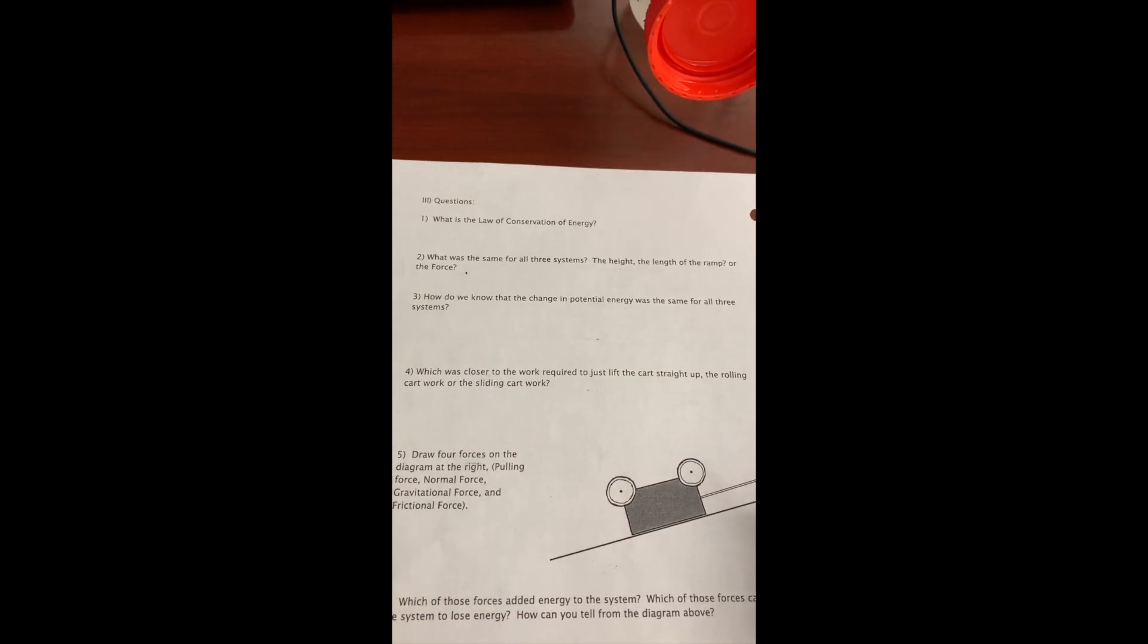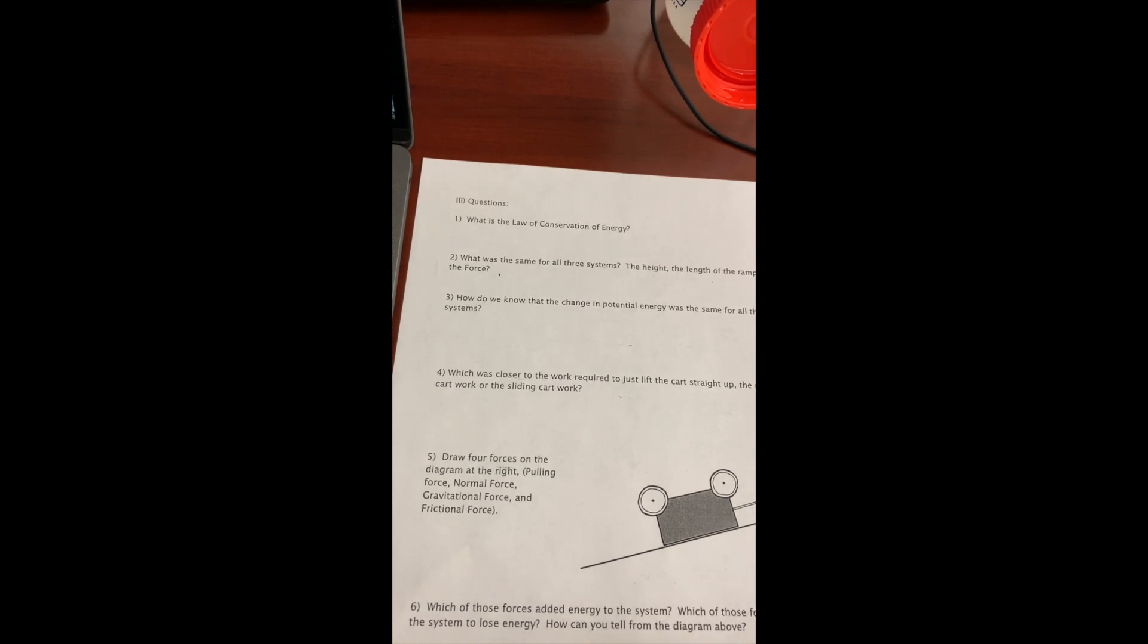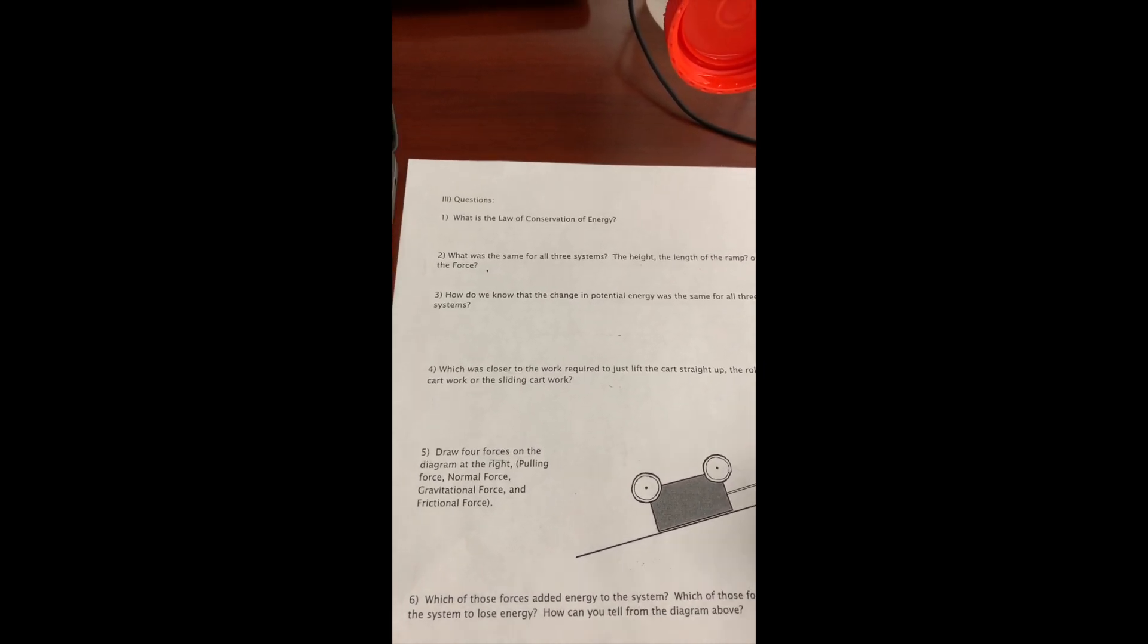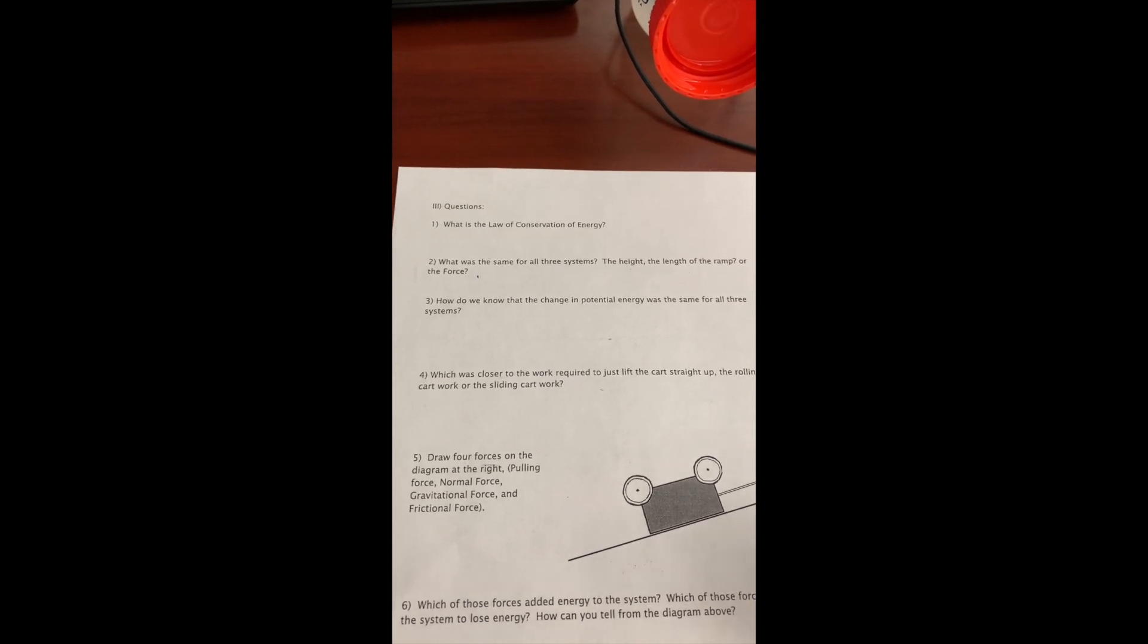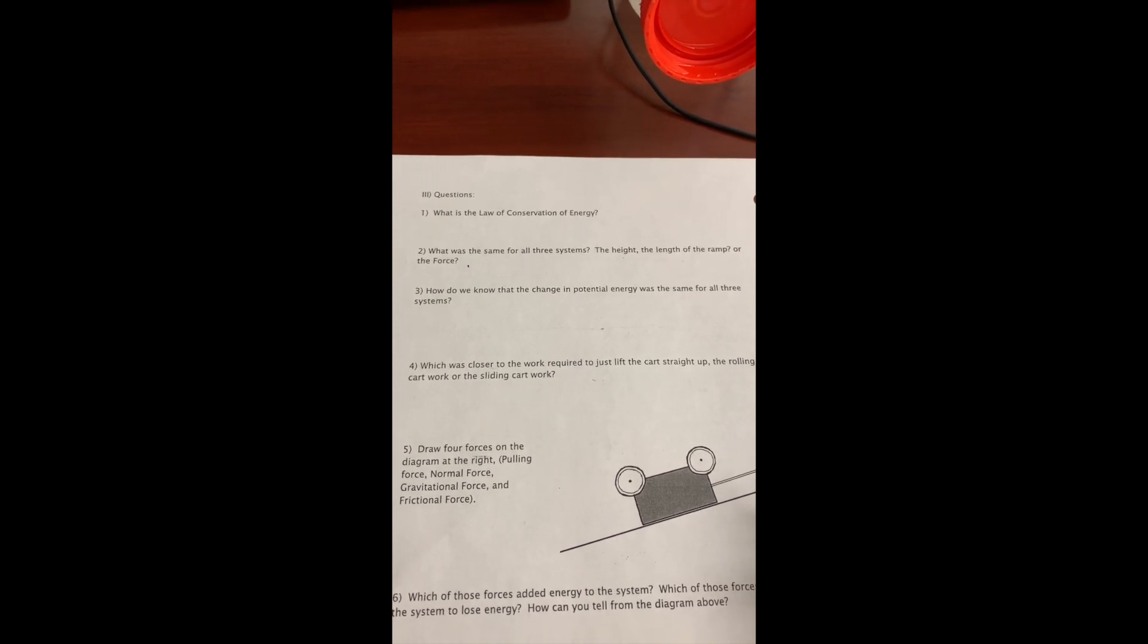How do we know that the change in potential energy was the same for all three systems? Well, it would help if you knew what the potential energy equation was, and remember that the equation is on the front. And so in order for the potential energy to be the same, all the parts of the potential energy equation should be the same.